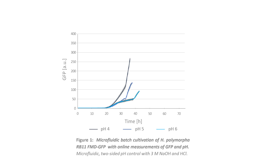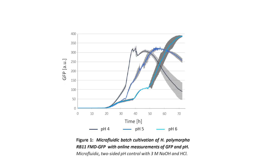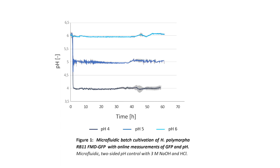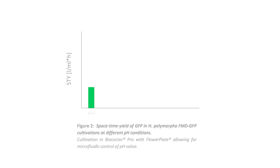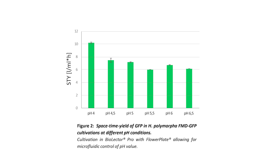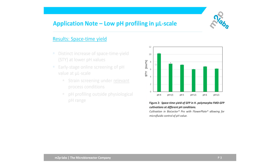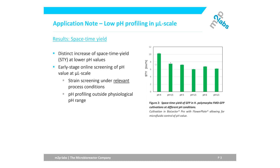Now, as the diagram shows, GFP is online monitored as well as pH value, from which you get a proof of stable pH regulation. More interestingly, it can be seen that at lower pH value the space-time yield increases, and this difference over the pH range is very distinct. At lower pH value around 4, the space-time yield is nearly twice as high compared to pH of 6, the common lower boundary of conventional optode-based measurement.